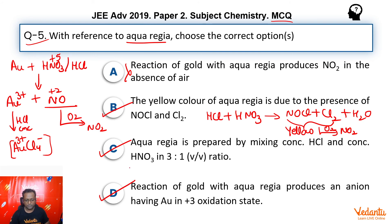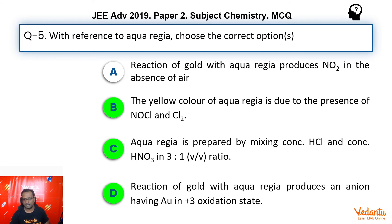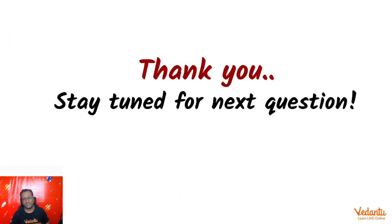Therefore B, C, and D are the answers. The mistake in Option A is that NO₂ is produced in the presence of air, whereas NO is produced in the absence of air. Thank you so much for joining us and stay tuned for our next question.